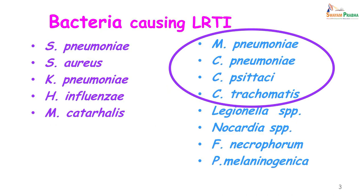The common organisms causing lower respiratory tract infections are Streptococcus pneumoniae, Staph aureus, Klebsiella pneumoniae, H. influenzae and M. catarrhalis, but today we are going to be concentrating on this group of organisms: Mycoplasma pneumoniae, Chlamydophila pneumoniae, Chlamydophila psittaci and Chlamydia trachomatis.